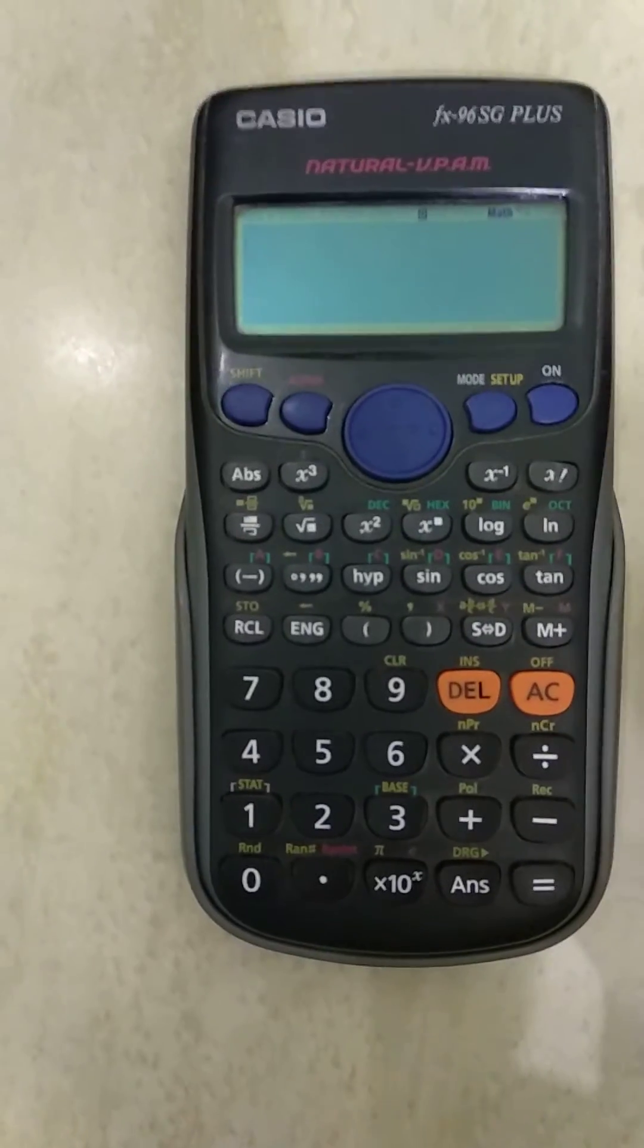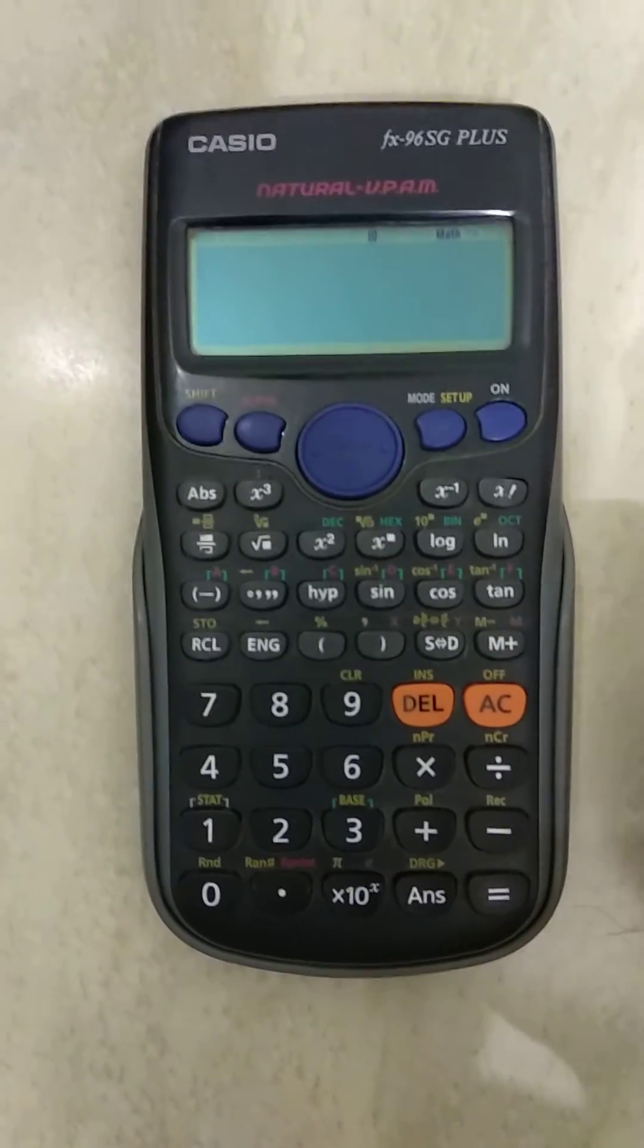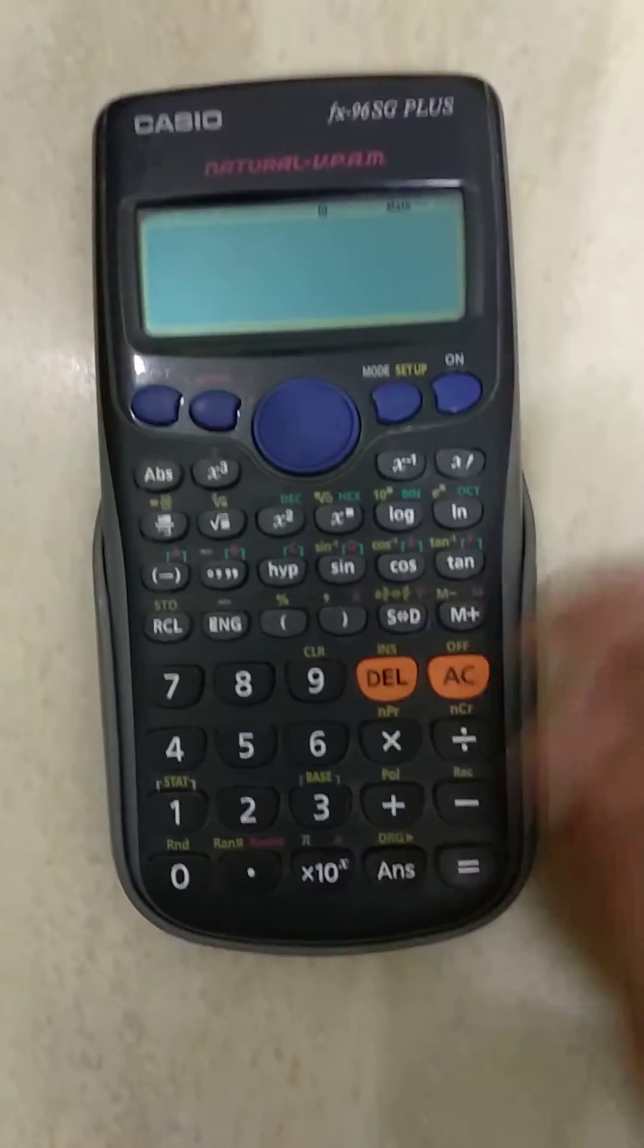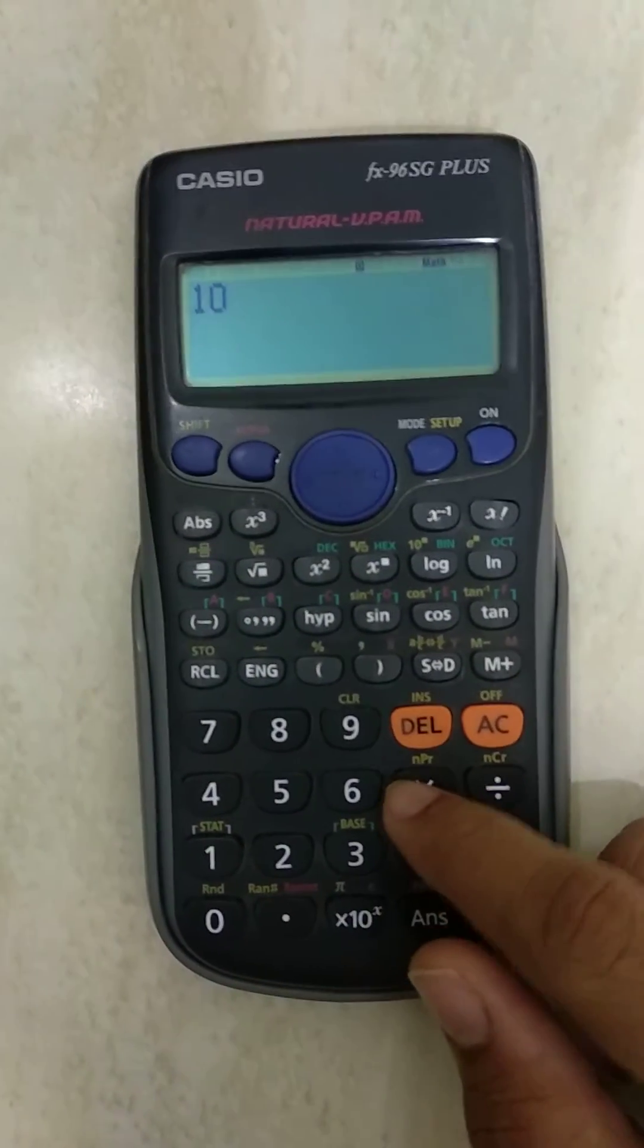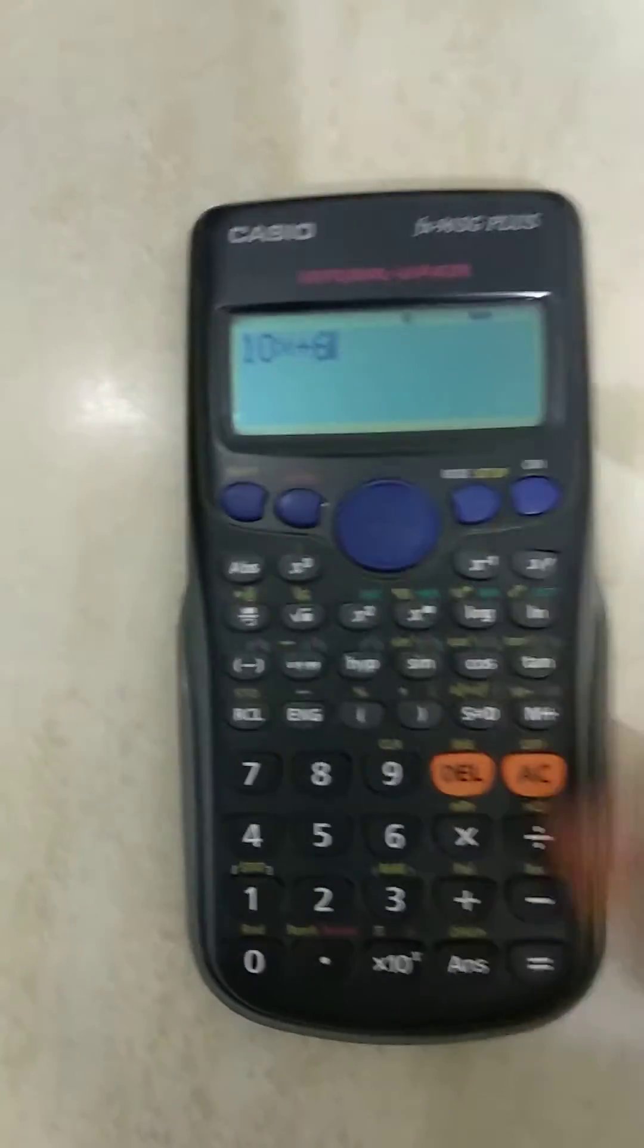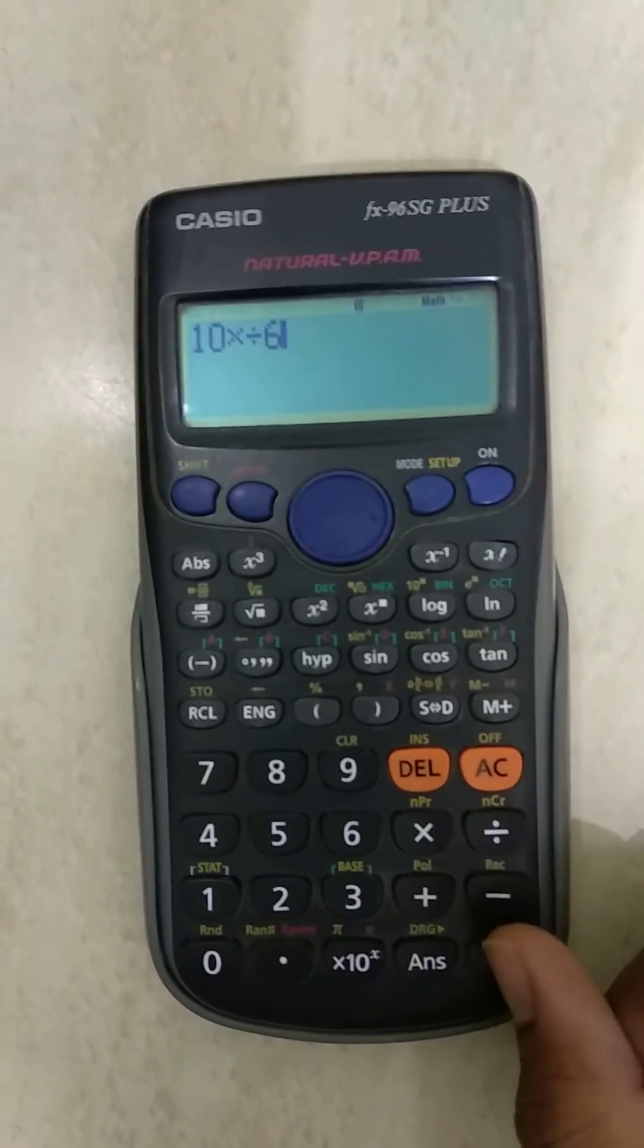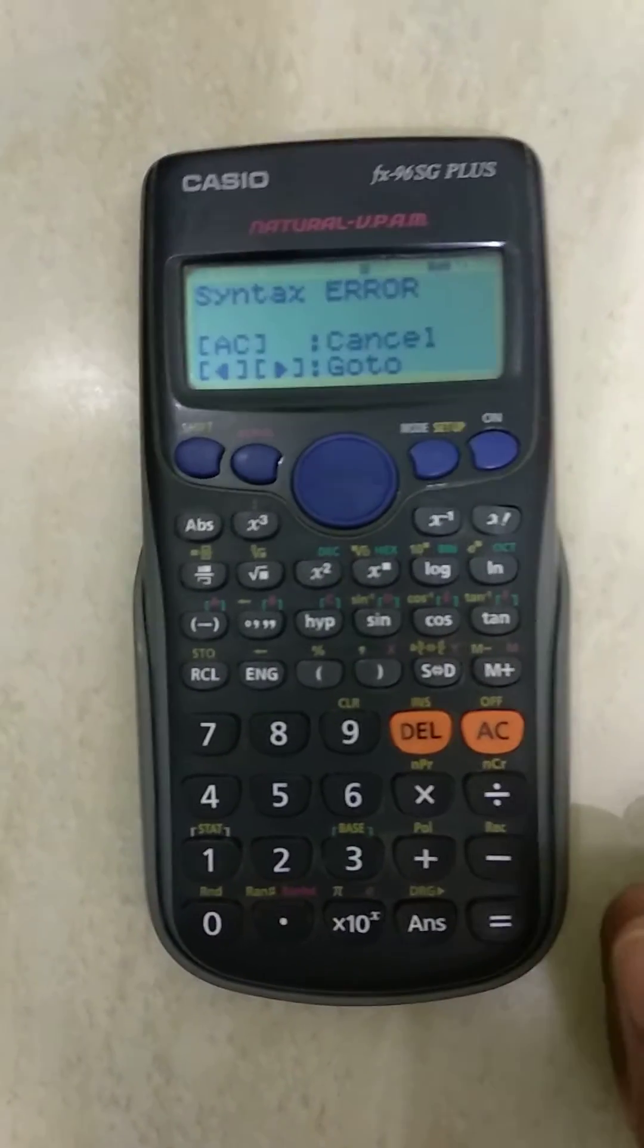The first error we're going to perform is the syntax error. Basically, this error can occur when you mix up the syntax or use it wrongly. For example, 10 into divided by 6. We know that these are wrong syntaxes. Multiplication and division cannot go together. So when you press the equal sign, it will give us the syntax error.